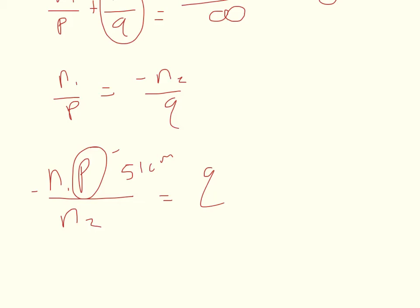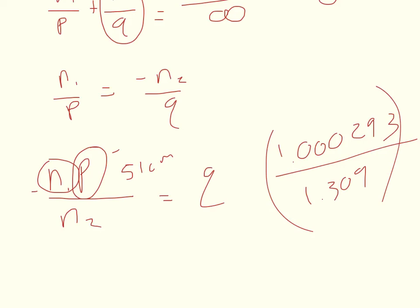Now, it tells us for ice, N1 is going to be the index of refraction for air. And actually, I used air even though you can assume that it's 1. I actually used 1.000293. Then you divide that by the index of refraction for ice, which is 1.309. And then you multiply that fraction by P, which is 51 centimeters. And you should get that Q is equal to 38.97245 centimeters.